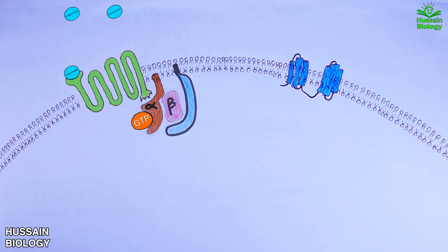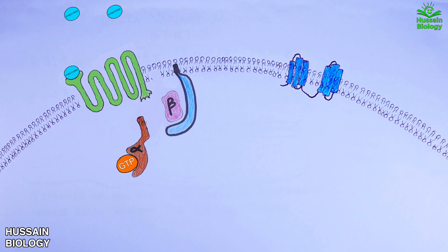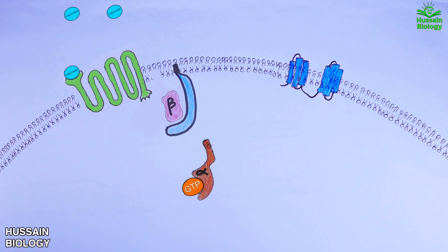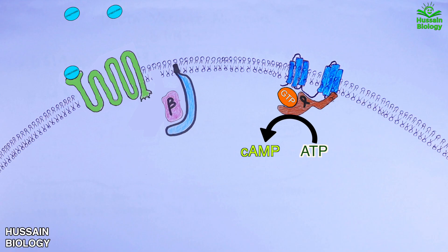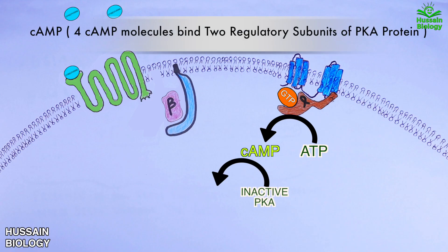The binding of GTP with the G alpha subunit drives the activation of the G protein, and this G alpha subunit dissociates from the rest of the G protein. It then leaves and binds with the adenyl cyclase as shown in the animation. Upon binding with the adenyl cyclase, the adenyl cyclase is activated.